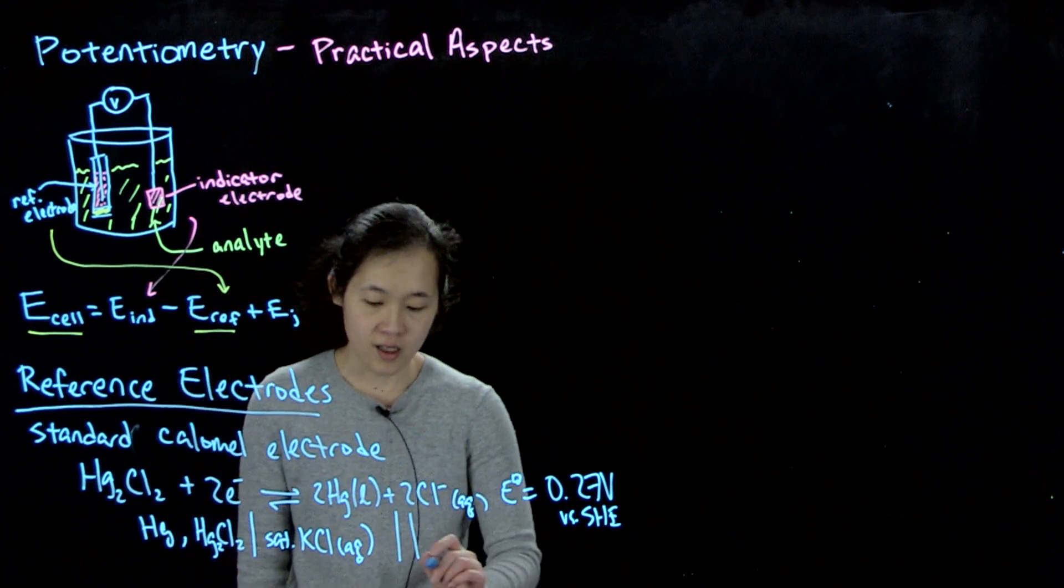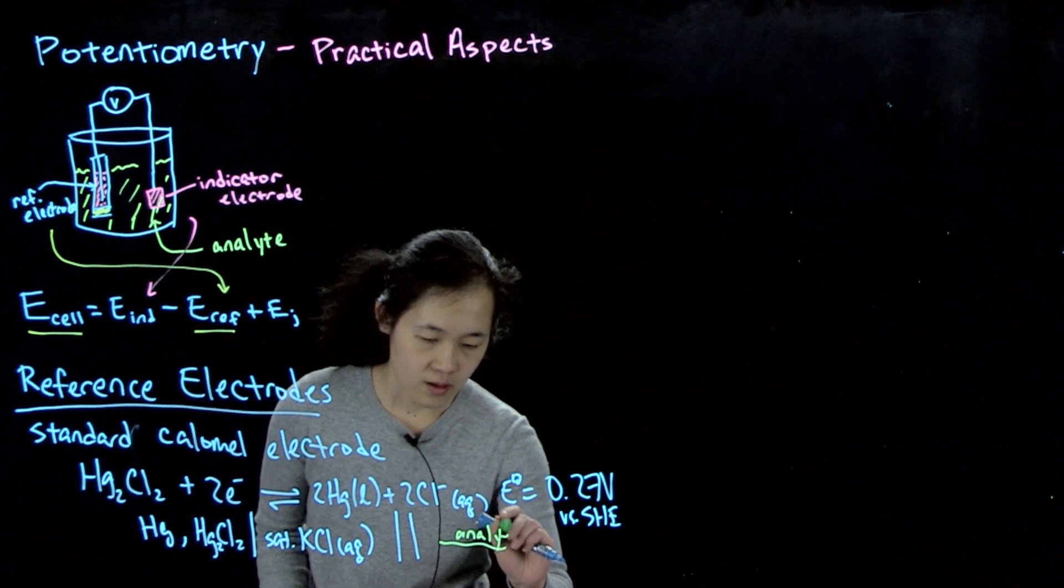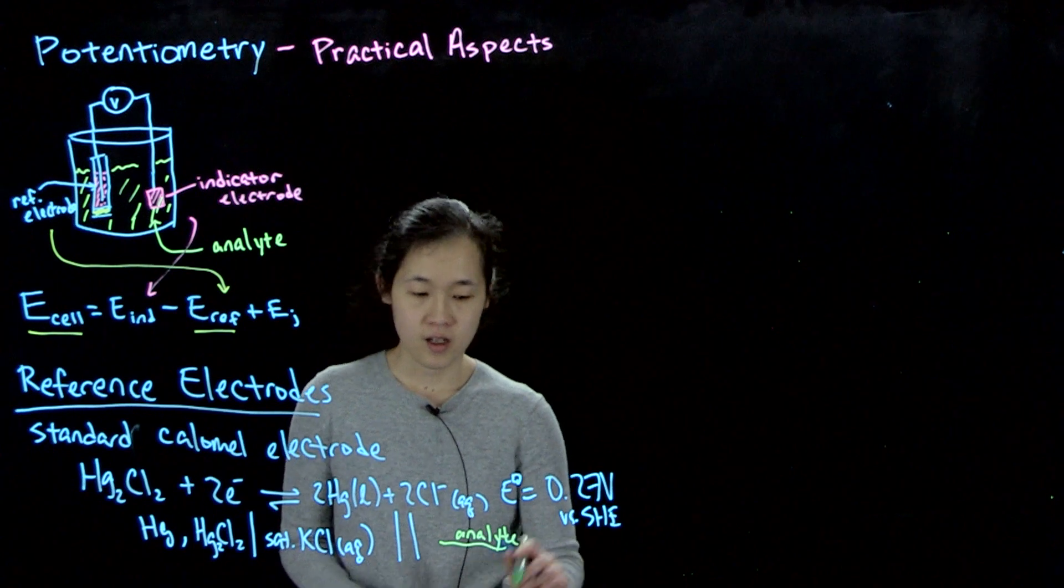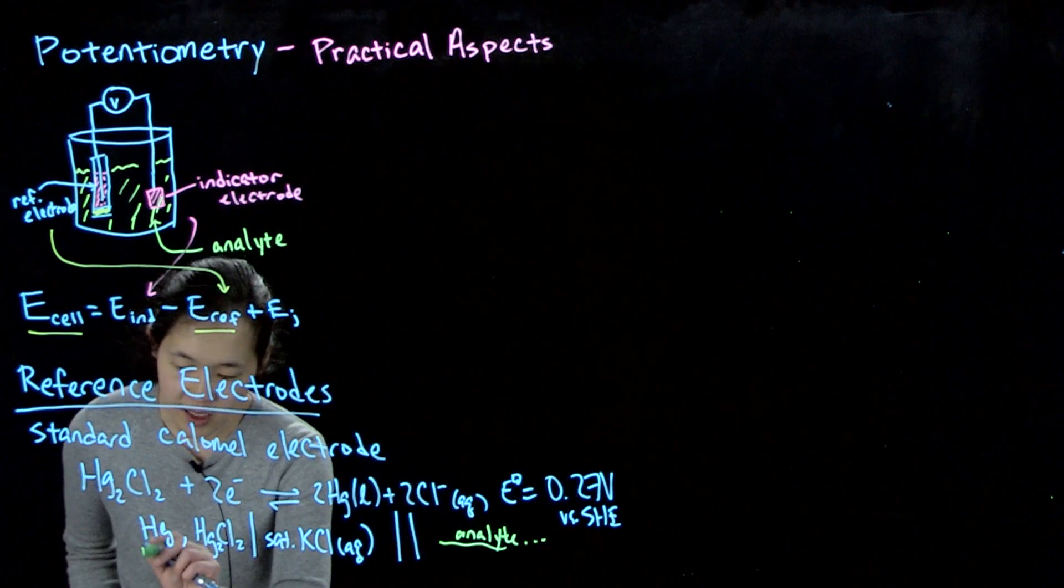We have a phase boundary because saturated chloride is aqueous. So this is in solid phase. This is aqueous. So this is our left side electrode for the reference electrode. And then we'll have our salt bridge. And then we'll do whatever analyte's going on here. And then indicator electrode, et cetera, et cetera. So this side is our reference that we care about.